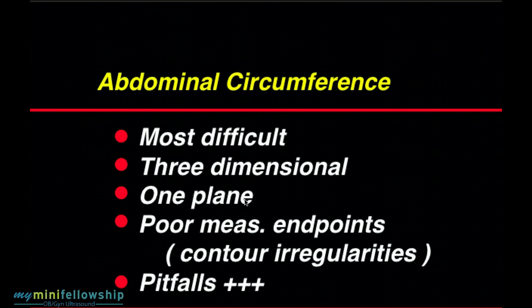This is very similar to the head circumference. But the difference here is that the endpoints of measurement of the head circumference are excellent — you're measuring to the edge of the calvaria, which is bone, very easy to see that edge. But the endpoints of measurement of the abdominal circumference is the skin. And the skin can be up against the placenta, it can be up against the myometrial wall, and the fetal thigh may indent the abdominal wall. The abdominal wall can have contour irregularities, and therefore there are many pitfalls in the measurement of the abdominal circumference.